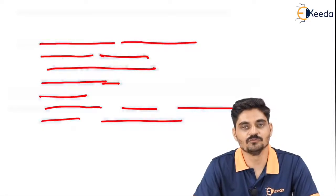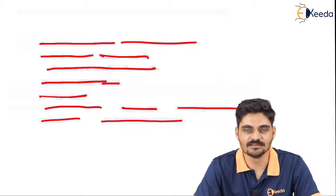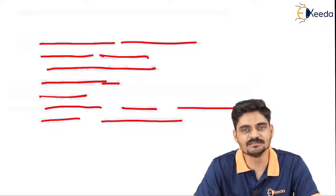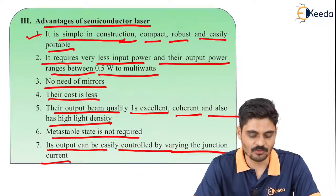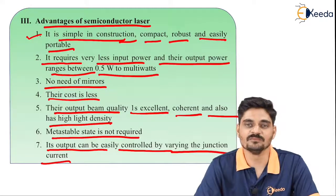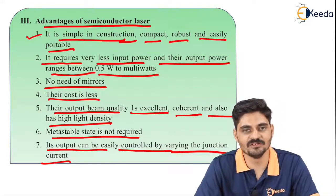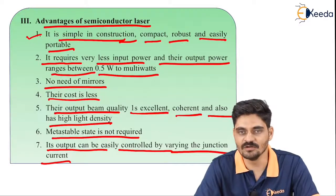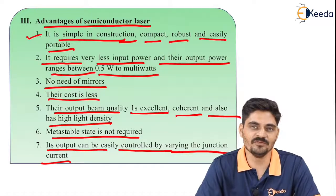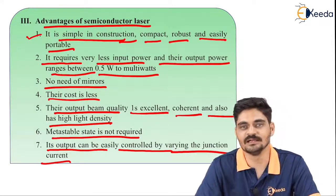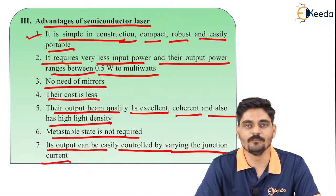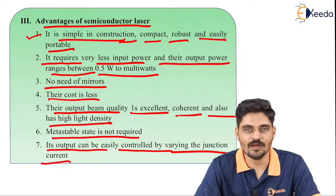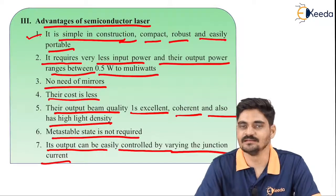Among the three types of lasers discussed, semiconductor laser is the most convenient and simple. An important distinction is that metastable states and population inversion are required in helium-neon and Nd:YAG lasers, but semiconductor laser does not require a metastable state — although population inversion is present in all three. Optical pumping schemes such as four-level pumping are used in helium-neon and Nd:YAG lasers, but not in semiconductor laser.